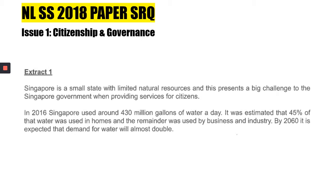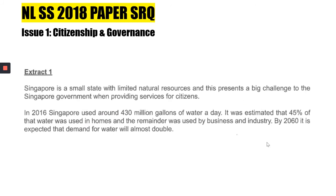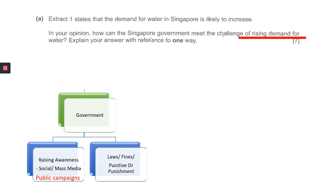The issue is on citizenship and governance, and specifically it talks about water — the rising demand of water. You can see that for Singapore, being a very small country, the demand of water is definitely great because we usually import our water from our neighboring countries. In this particular question, they ask about how the Singapore government meets the challenge of rising demand of water.